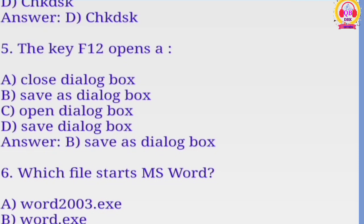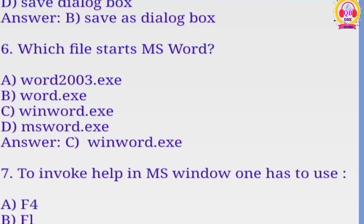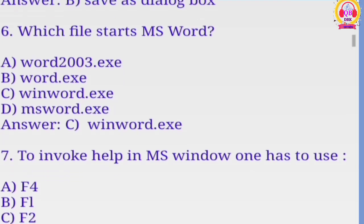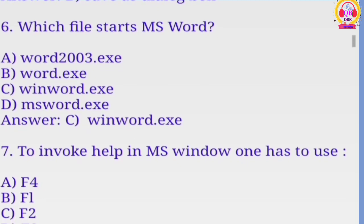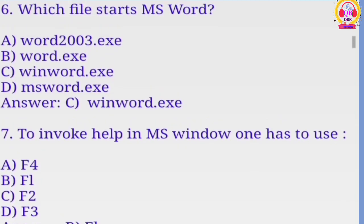The key F2 will open close dialogue box, save as dialogue box, open dialogue box, save dialogue box. B is the correct option, save as dialogue box. Which file starts MS Word 2003? Correct option is C.